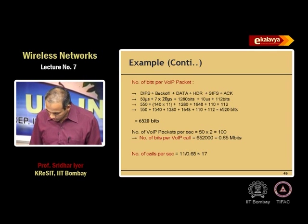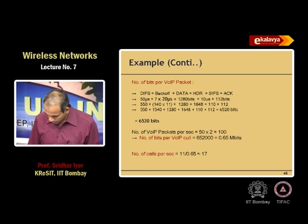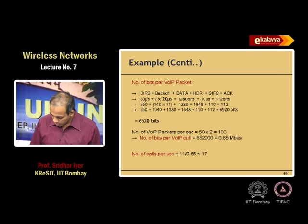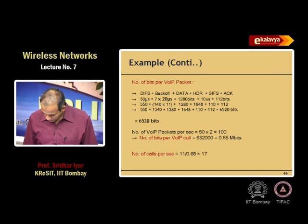Now, how many such packets have to fit in a second? The number of VoIP packets per second is 50 into 2 — 50 into 2 packets per second, which is 100 packets per second per call. So that means number of bits per VoIP call is 6,520 times 100, which is 652,000 — so this is 0.65 megabits.